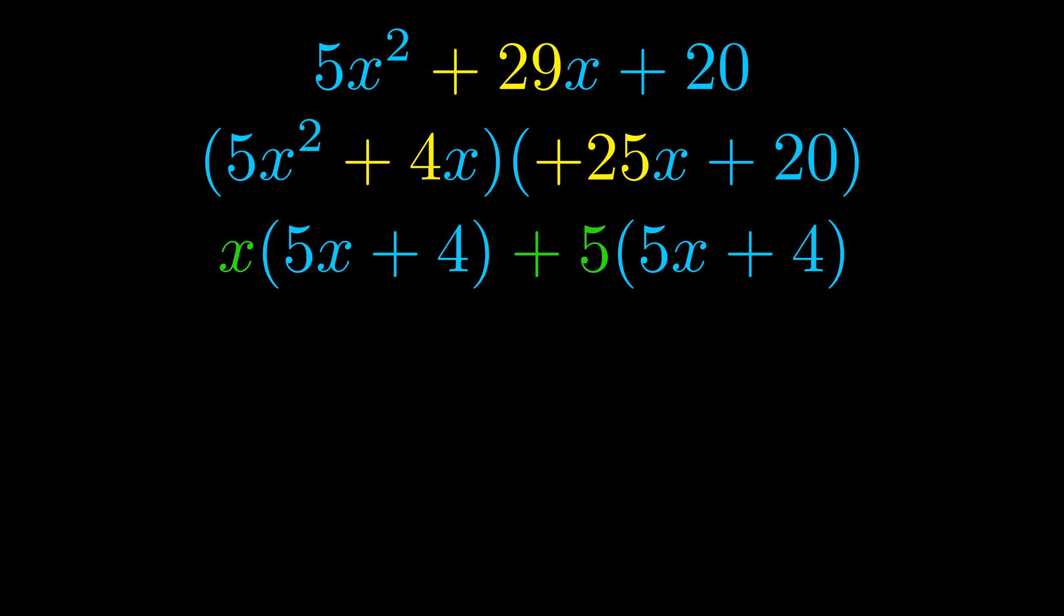Notice also how what remains inside of the parentheses is the same in both cases. The blue values are the same. Those blue values will become one of our factors and we will combine the two green values, the GCFs that we pulled out, to get the other one. And that is our fully factored equation.